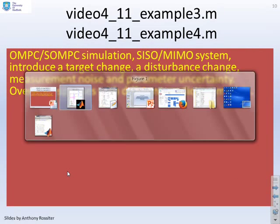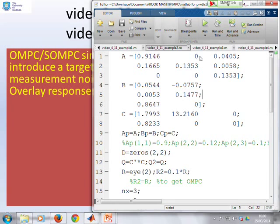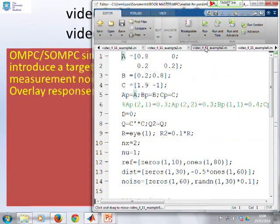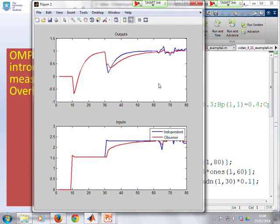Let's demonstrate this then. So if I go to example three and run this one, this is the SISO case, you'll see what are the system outputs I get if I use the independent model for estimating the disturbance. That's in blue. Or if I use an observer for estimating the disturbance.